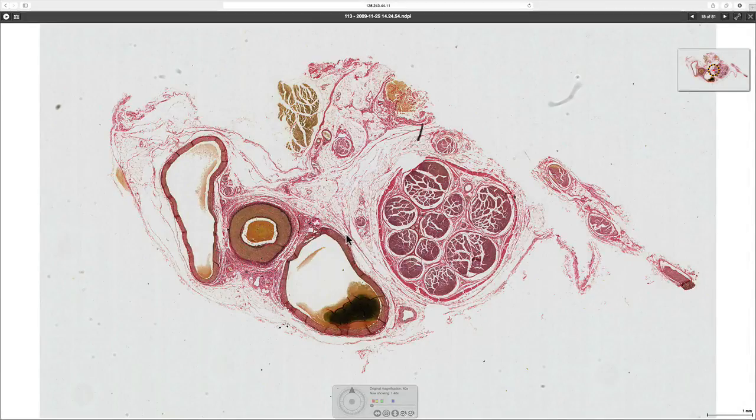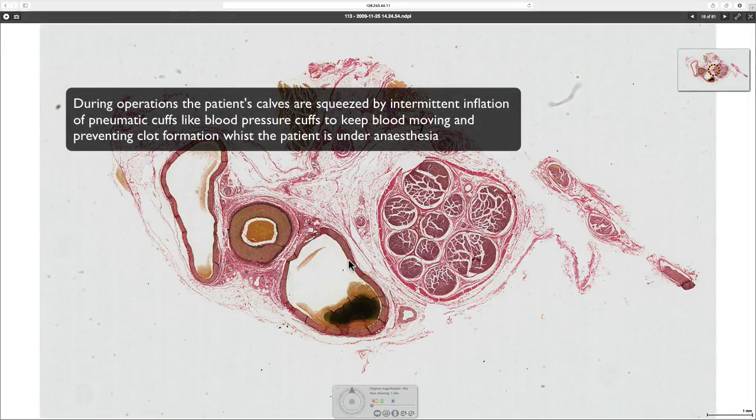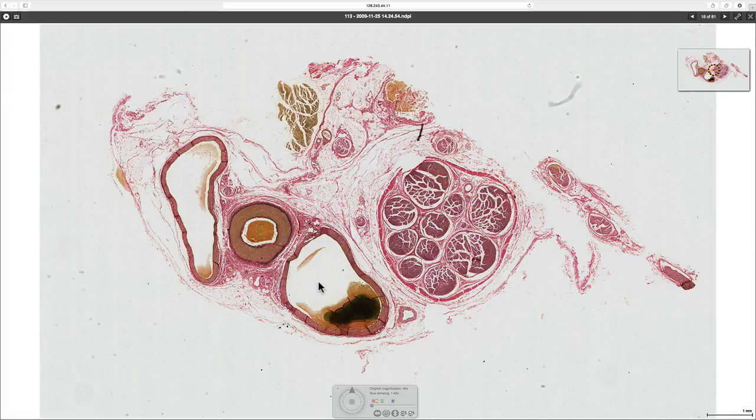And that's why we should keep moving when we're on long-haul flights, for example, or after surgery, to prevent clotting from happening in the vessels, in the veins. So that's really a summary of the artery and vein structure.